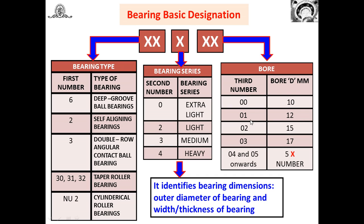The last two digits indicate the bore diameter. If the number is 00, bore diameter is 10 mm; 01 is 12 mm; 02 is 15 mm; 03 is 17 mm. After 03, if the number is 04 or greater, that number is multiplied by 5 to get the bore diameter. For example, 04 × 5 = 20 mm; 05 × 5 = 25 mm. Bore diameter means the diameter of the shaft over which the bearing is to be fitted.